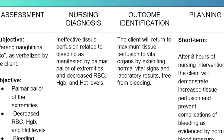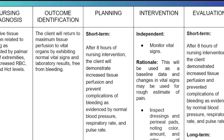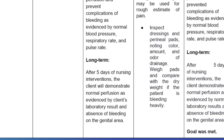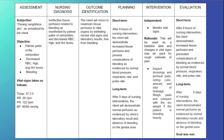For outcomes identification, the client will return to maximum tissue perfusion to vital organs, exhibiting normal vital signs and laboratory results free from bleeding. Short-term: after eight hours of nursing intervention, the client will demonstrate increased tissue perfusion and prevention of bleeding complications as evidenced by normal blood pressure, respiratory rate, and pulse rate. Long-term: after five days, the client will demonstrate normal perfusion as evidenced by normal laboratory results and absence of bleeding. Independent nursing interventions include: monitor vital signs, palpate peripheral pulses, note capillary refill, assess urinary output and characteristics, and evaluate changes in mentation — these are indicators of systemic perfusion adequacy, fluid or blood needs, and developing complications.